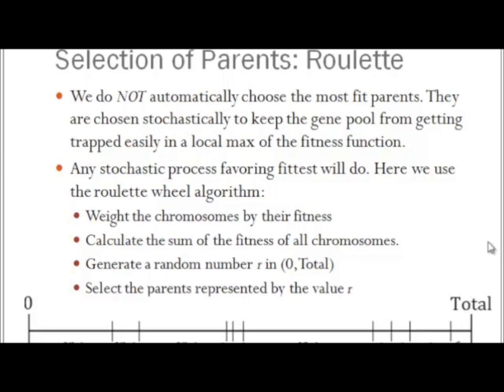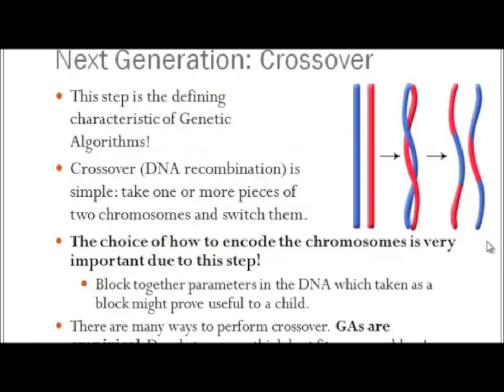So, very straightforward, but the stochasticity of this process is very important. Now we have parents, and now the magic happens — we produce offspring. The first step is crossover. As we mentioned in the opening, this is the defining characteristic of genetic algorithms. There are many other evolutionary algorithms, but genetic algorithms specifically means we have crossover.